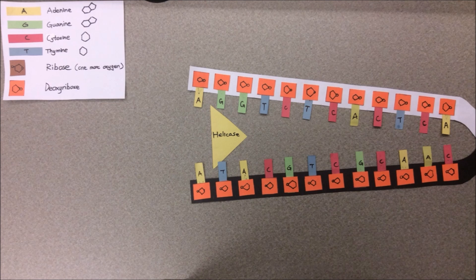The initiation point where the splitting starts is called origin of replication. The replication origin forms a Y-shape and is called a replication fork.